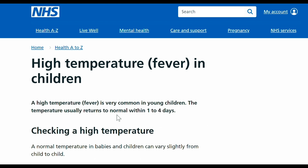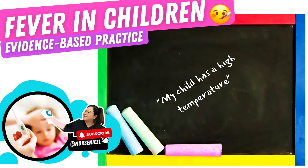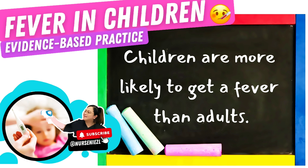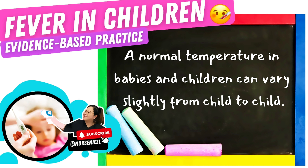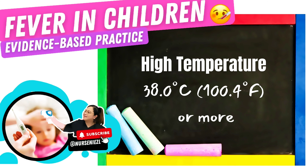A high temperature or fever in children is very common in young children. The temperature usually returns to normal within one to four days. Children are more likely to get a fever than adults. A normal temperature in babies and children can vary slightly from child to child. Fever is a physiological response characterized by an elevation of body temperature above normal daily variation. A high temperature is 38 degrees Celsius or 100.4 degrees Fahrenheit or more.